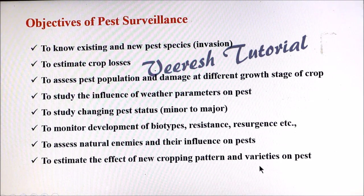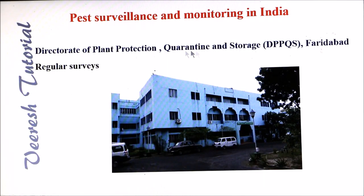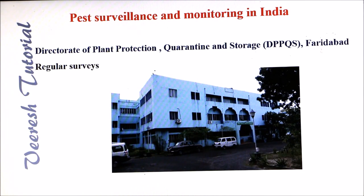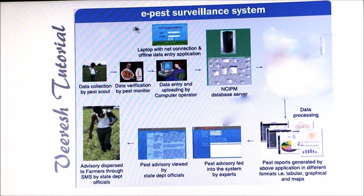The Directorate of Plant Protection Quarantine and Storage (DPPQS), located at Faridabad, organizes regular surveys on major field crops in different agro-ecosystems in collaboration with ICAR and SAUs to monitor pest population on different crops. A few ICAR institutes and SAUs have developed an e-pest surveillance system.